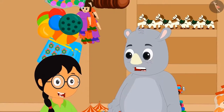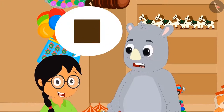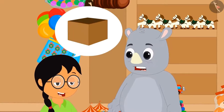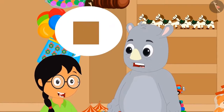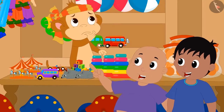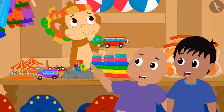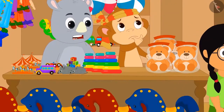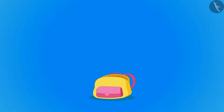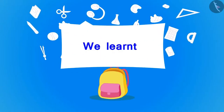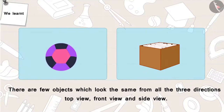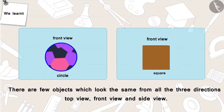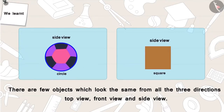There are some objects whose shape from all directions — top view, front view, as well as from side view — appear to be the same. Raju and Bablu started sewing happily and then the three of them went to play together in the park. So children, in this video we learnt that there are a few objects which look the same from all three directions: top view, front view, and side view.